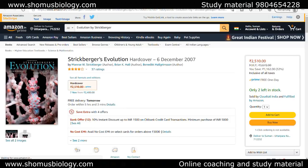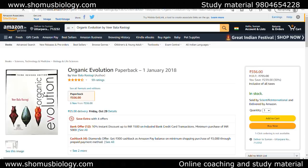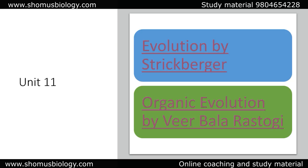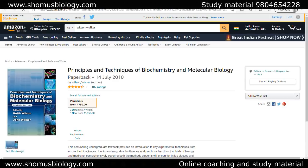Apart from Strickberger, if you find foreign author books complicated in terms of vocabulary, you can go with Bala Rastogi's book on Organic Evolution, which is also a very well-edited and well-written book. Either one will work for you. For Unit 12, go with Principles and Techniques of Biochemistry and Molecular Biology by Wilson and Walker.